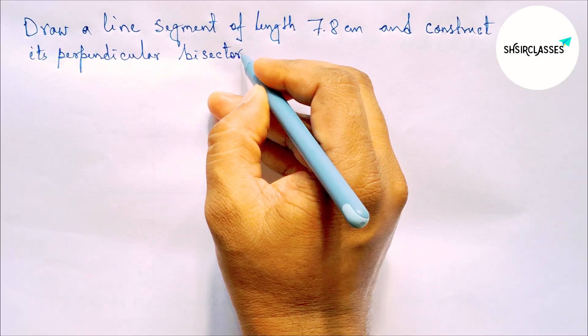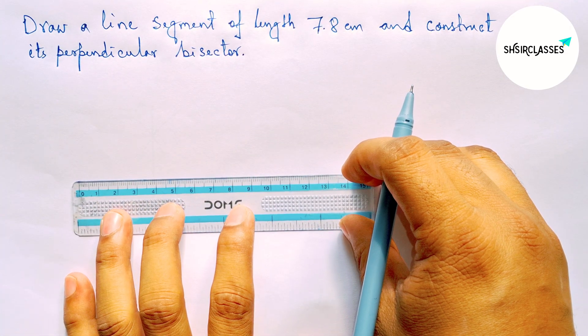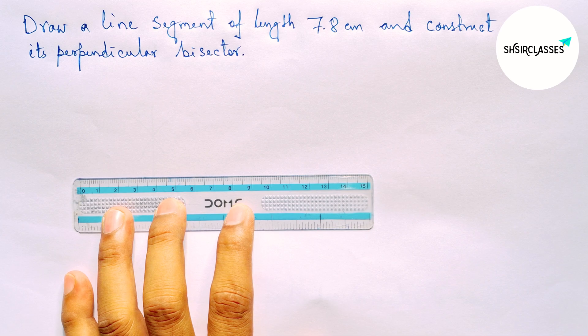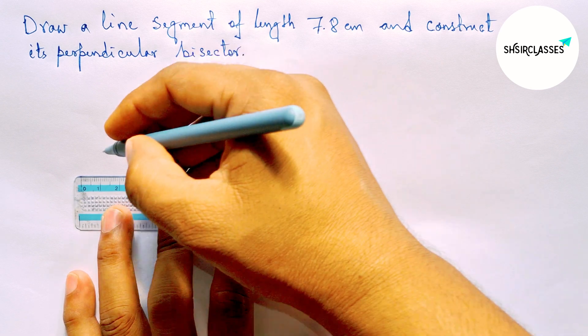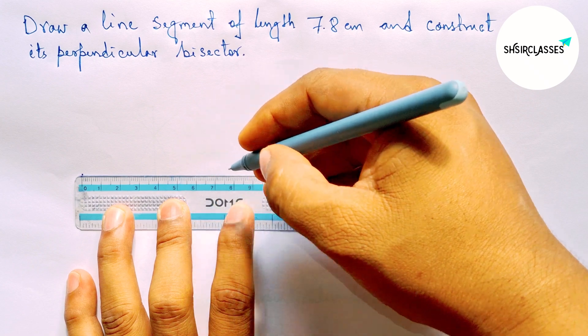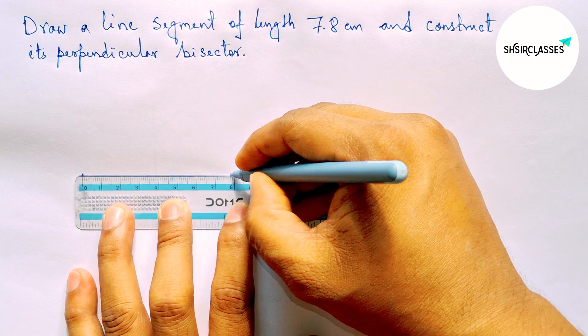Let's start the video. First of all, let us draw here a line segment of length 7.8 centimeters. So first marking here 0, then counting this is 7, then 7.5, then 7.8.